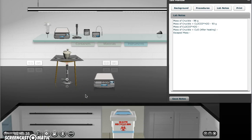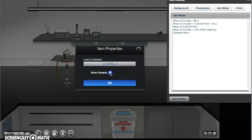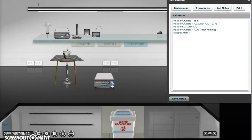Then, click the dial on the Bunsen burner once to adjust the flame setting to load. Now, double click the crucible and check the box labeled Show Contents. This will allow you to observe the reaction occurring.